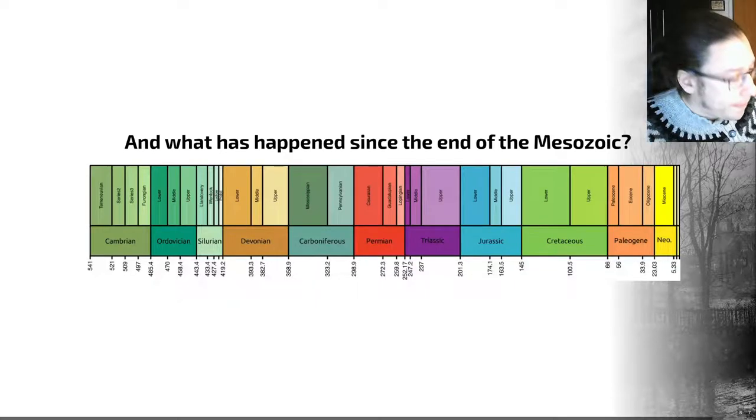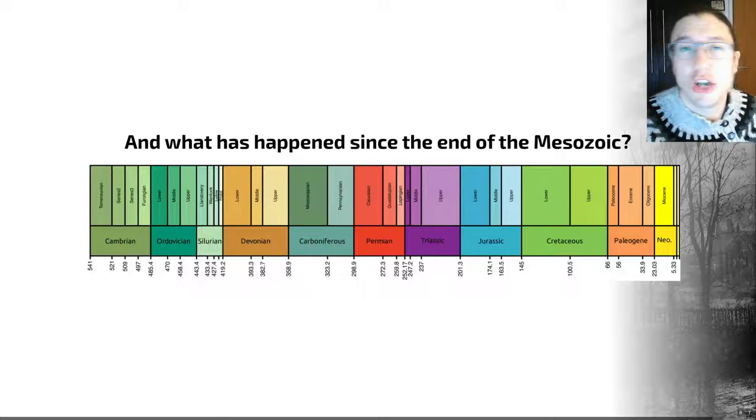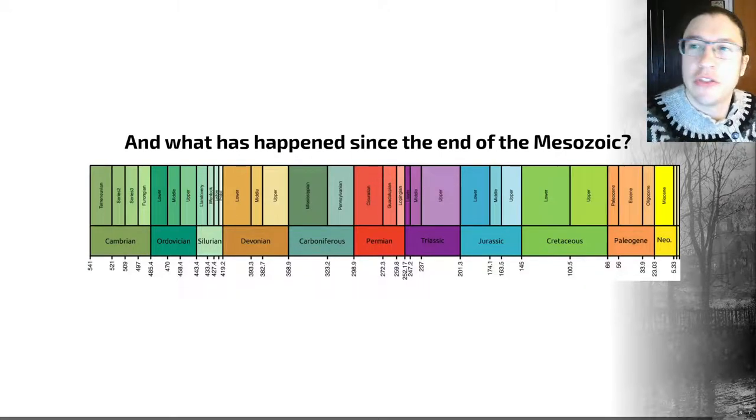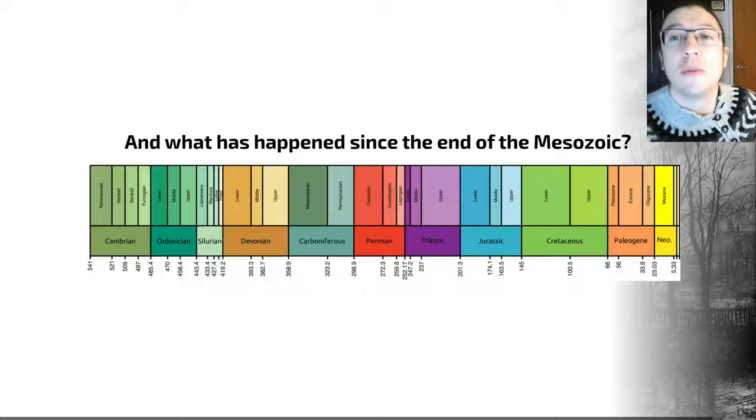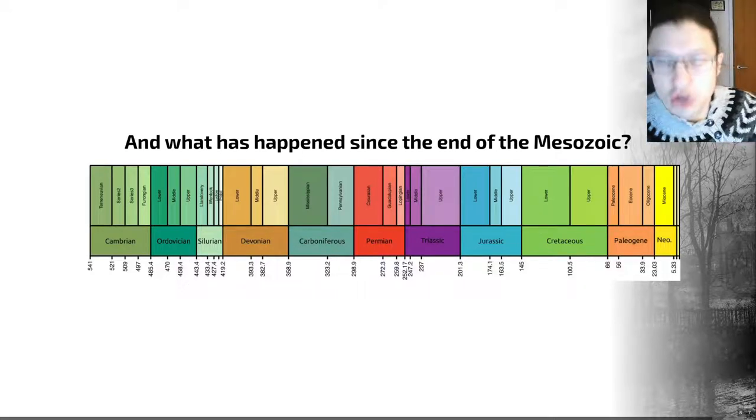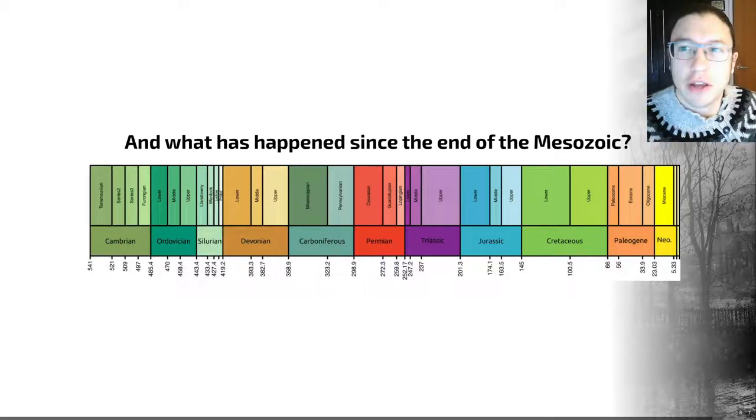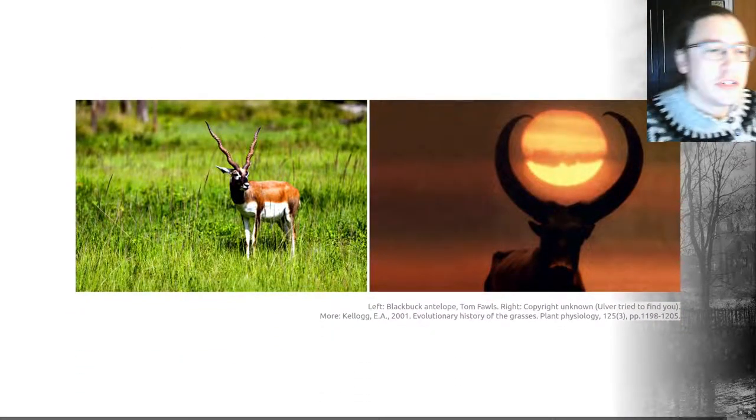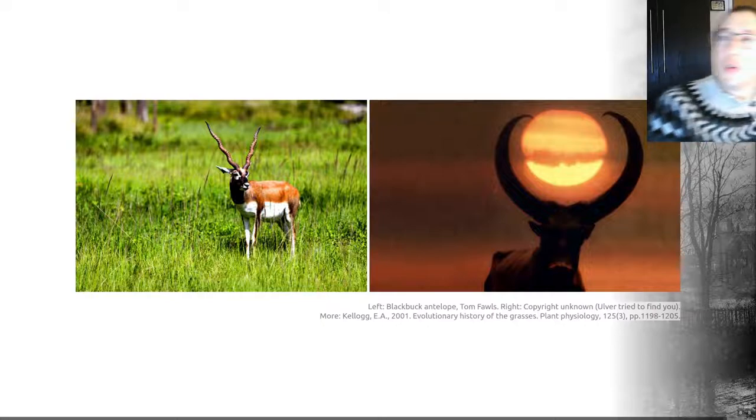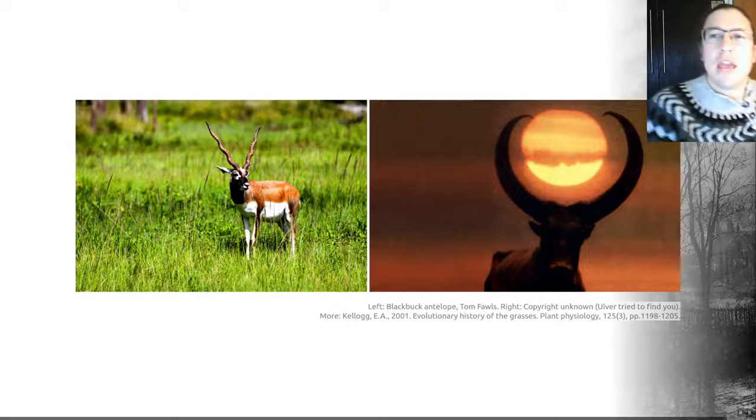By the end of the Cretaceous, you know from our extinction lecture that there was an extinction. And that was a sad time for many of the organisms that were alive at the time. For example, the non-avian dinosaurs took a bit of a hit, died out completely at the end of the Cretaceous. But there have been other interesting things that have happened in terms of evolution since the KPG extinction.